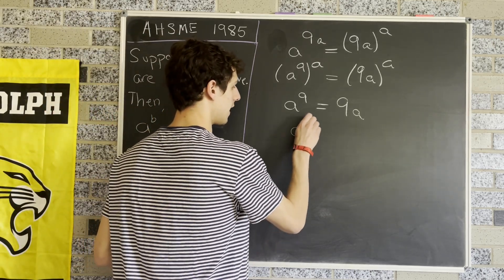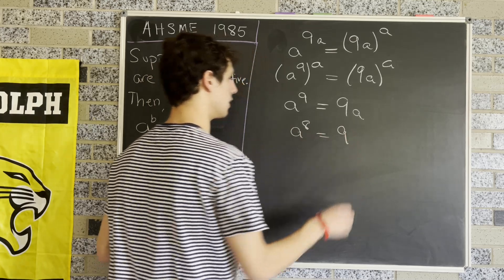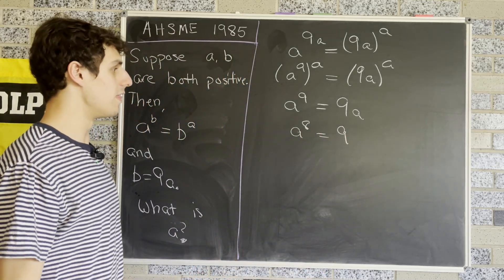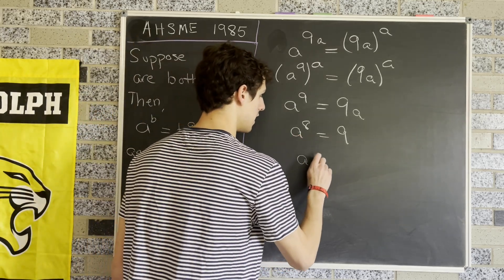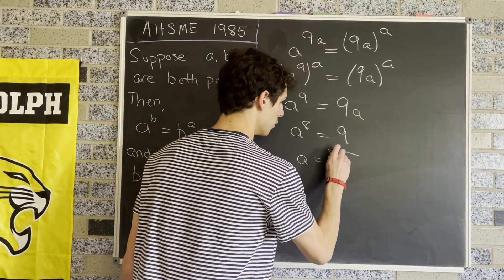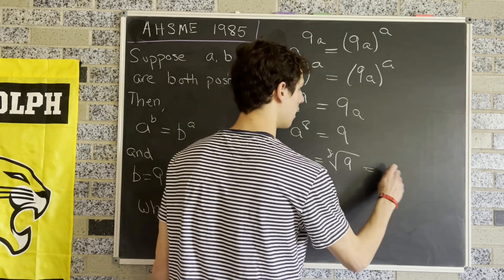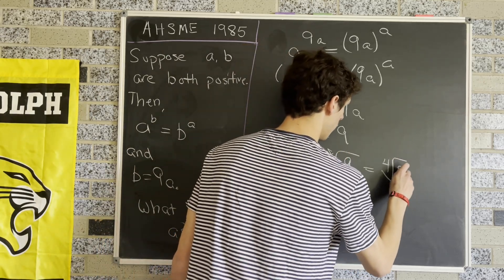Dividing both sides by A gives us A^8 = 9. Taking the 8th root of both sides gives us A equals the 8th root of 9, or the 4th root of 3.